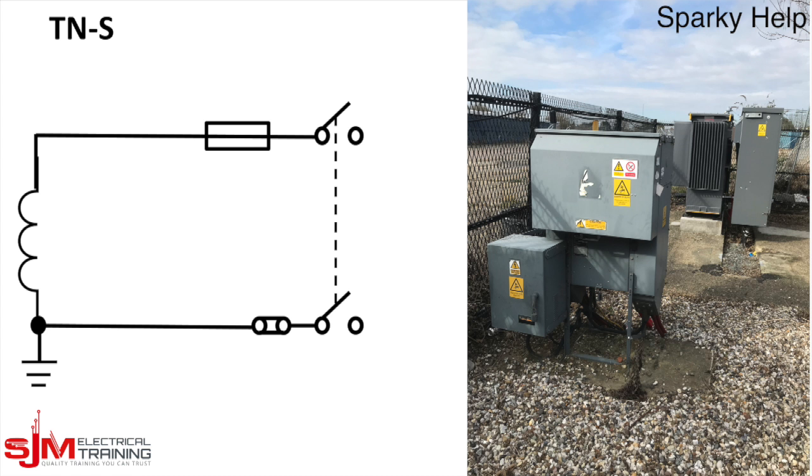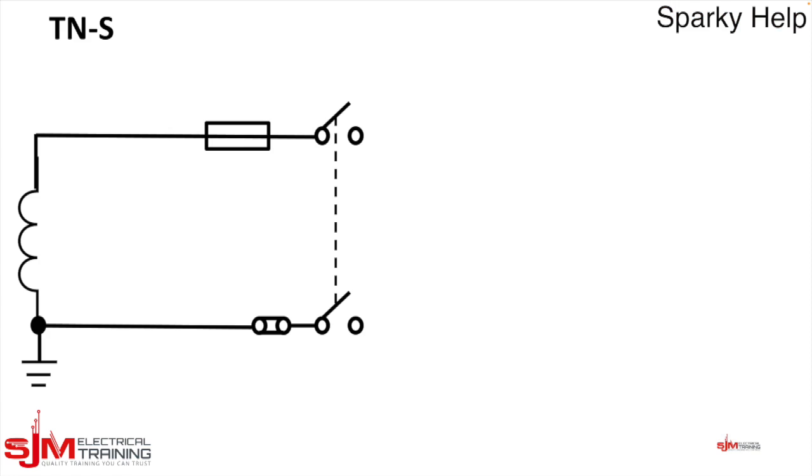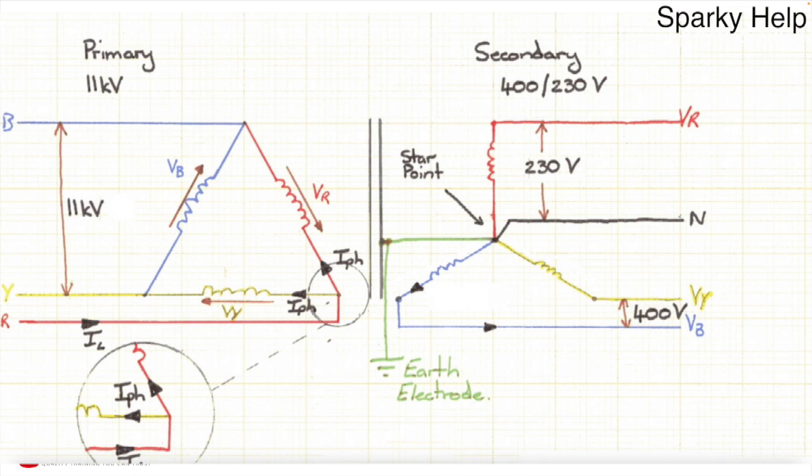Here we always start with the secondary of the distribution transformer. So this would be the delta to star, the 11kV, typically down to 400 stroke 230 as shown.